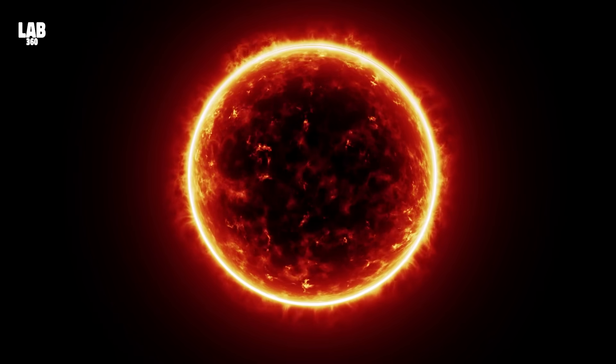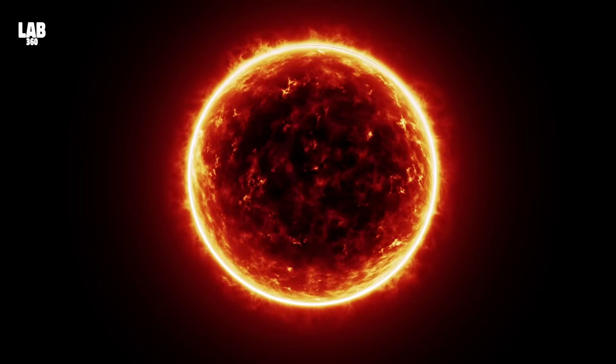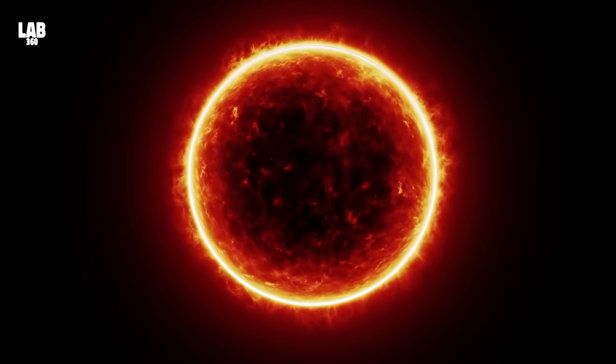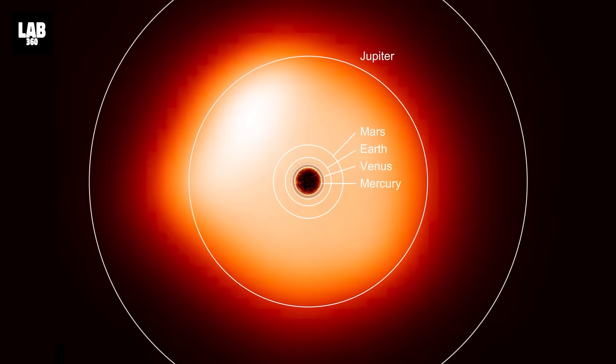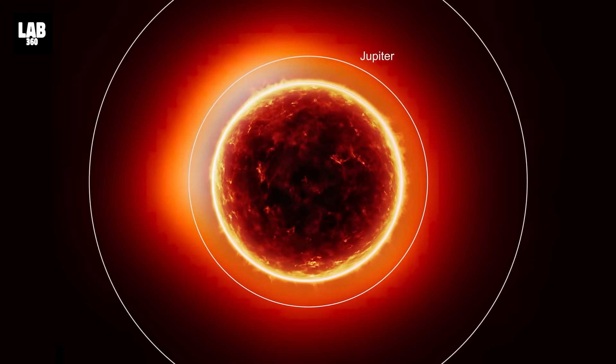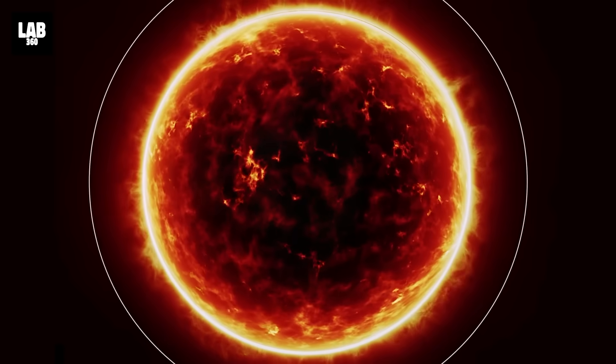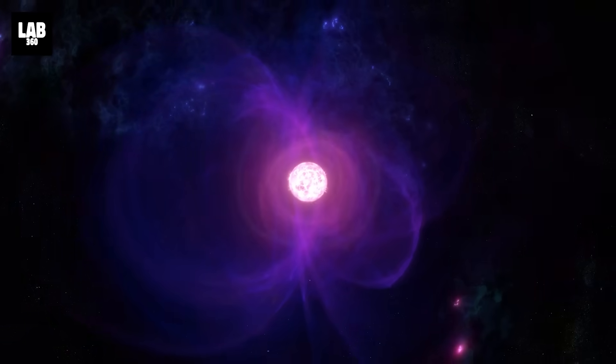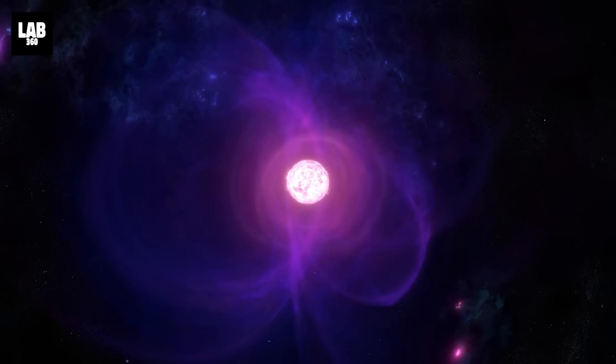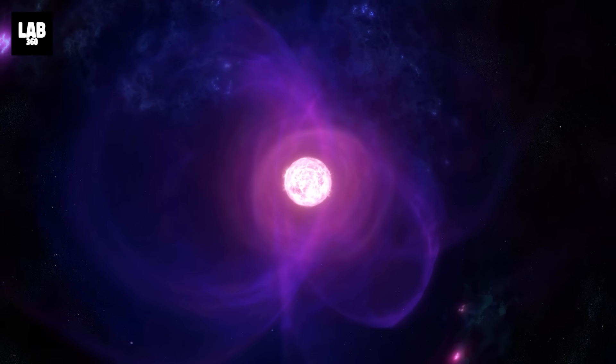Now Betelgeuse is a true giant, with a diameter more than 1,000 times that of our Sun. If you placed it at the center of our solar system, it would engulf the inner planets, including Earth, and go all the way up to Jupiter. Its immense size and mass make it a red supergiant star nearing the end of its life.